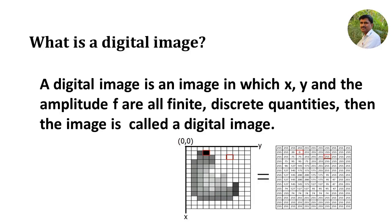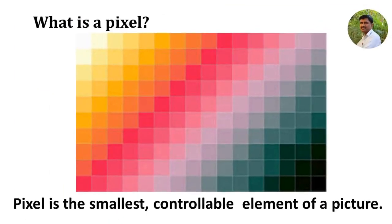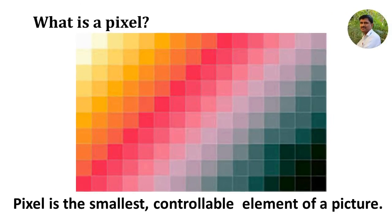Then what is meant by a pixel? If you go on zooming any image, you may see squares like this. These squares are termed as pixels or pelts. So, a pixel is defined as the smallest controllable element of a picture.